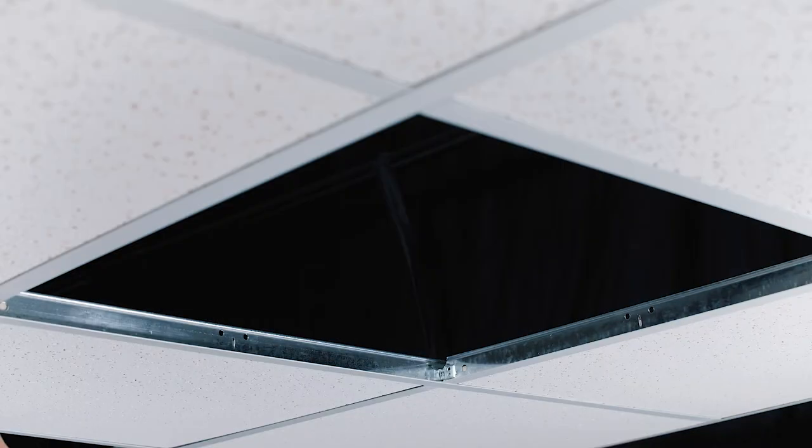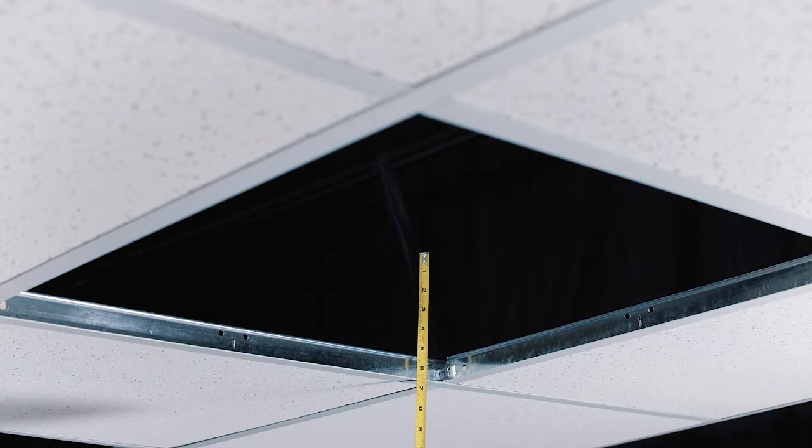The flush mount adapter needs to have a minimum ceiling tile grid opening of 22 inches by 15 inches with at least 4 inches of clearance above the grid for microphone supports and connections.